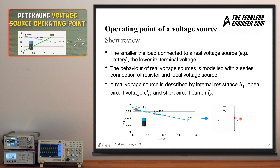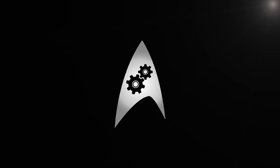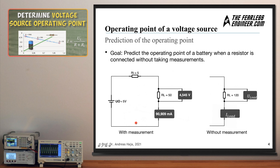If you short the terminals you get the short-circuit current, which is another parameter denoting the theoretical maximum current flow the battery can generate. So the behavior of a real voltage source is modeled as a series connection of an internal resistor and an ideal voltage source, described by the internal resistance, the open-circuit voltage, and the short-circuit current. That is the knowledge base needed to understand the operating point of a voltage source.